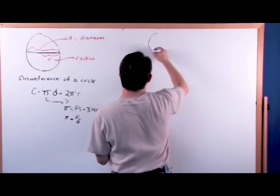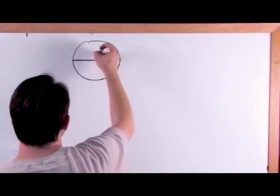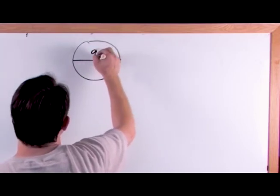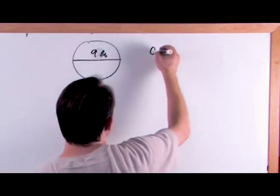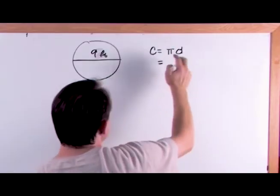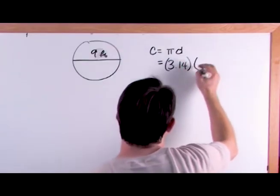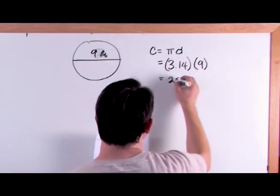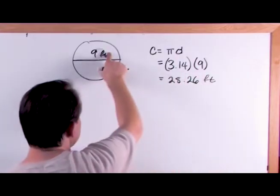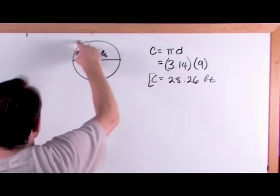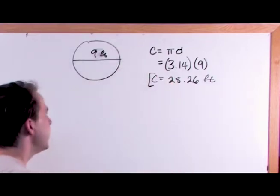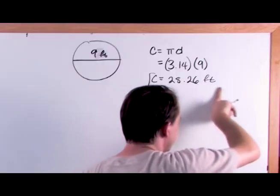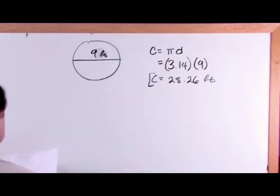Now we're going to work a few problems. Let's say you have a circle and the diameter is 9 feet. Find the circumference. Well, the circumference is pi times the diameter. Pi is 3.14, and the diameter is 9. So 3.14 times 9 gives you 28.26 feet. That means if you start here and go all the way around the circle, you will travel 28.26 feet. The .26 is an approximation because we abbreviated pi to two decimal places, but it gives you a pretty good idea of the real answer.